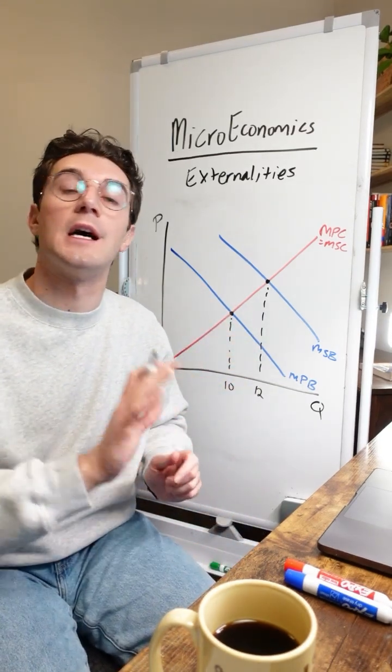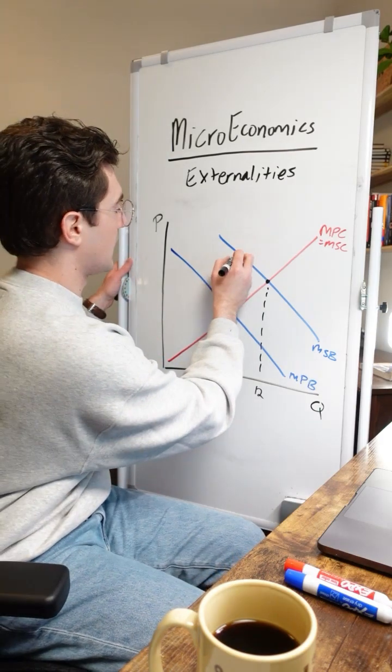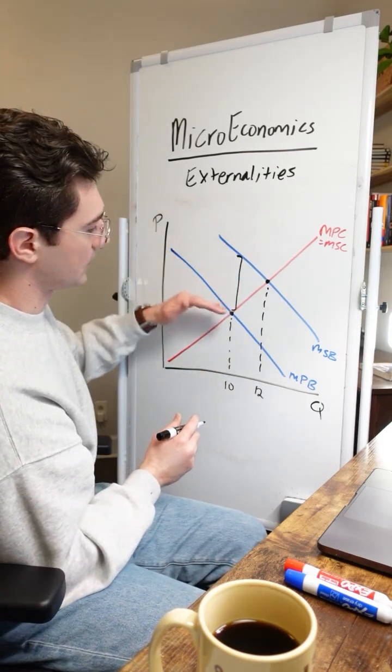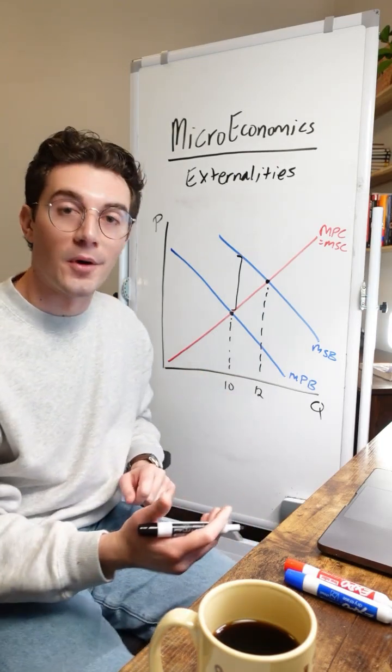Society wishes that the private market would output more of it because there's external benefits here, the vertical distance between the benefit curves, falling on third parties.